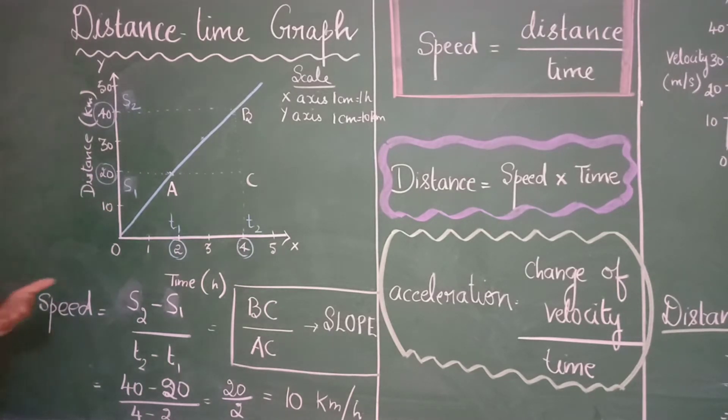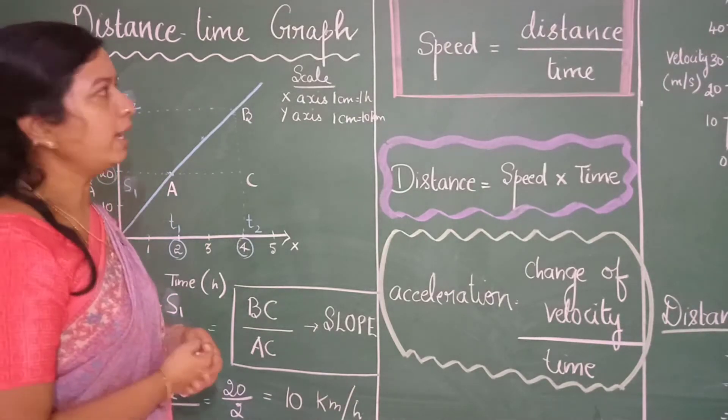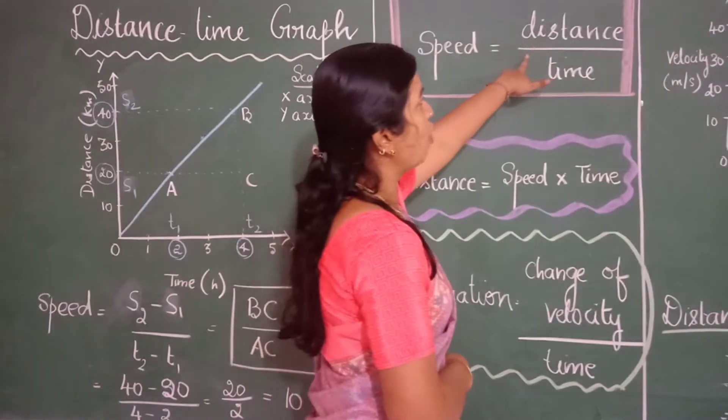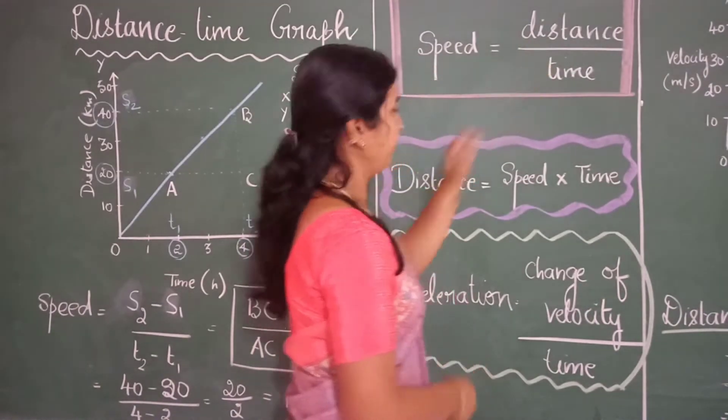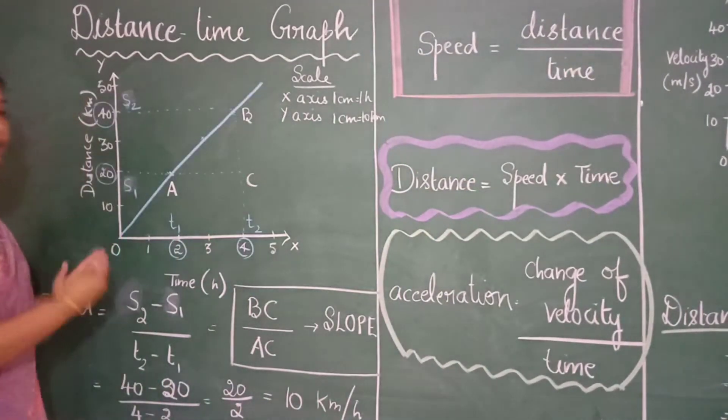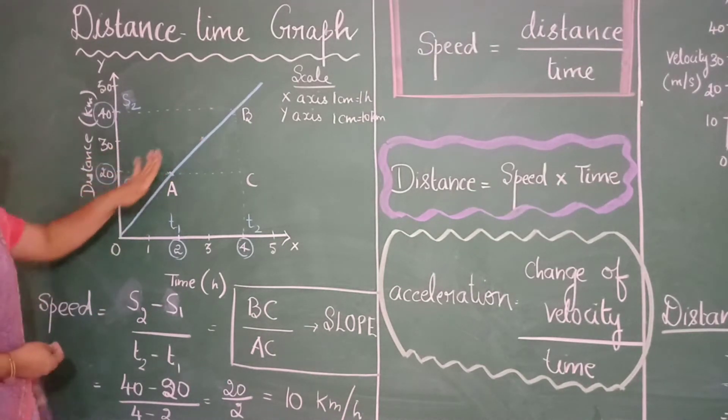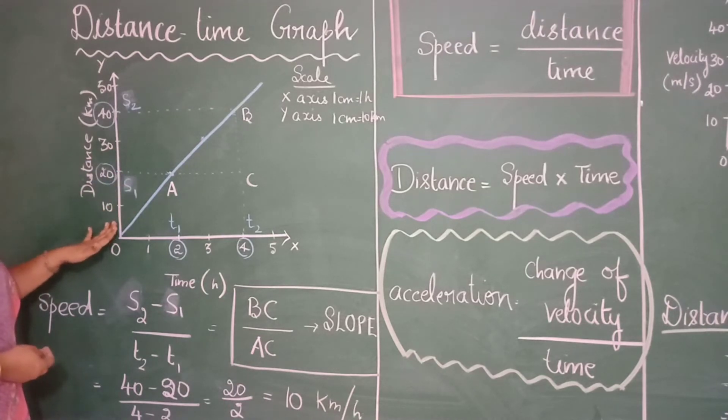Now just try to recollect the formula of speed. We know that speed can be calculated using this formula distance by time. So in case we are calculating the speed of this object, we know by looking at this graph that the object is moving with uniform motion.